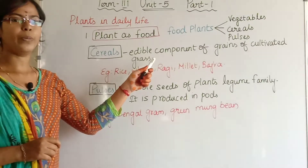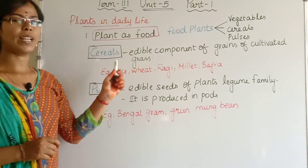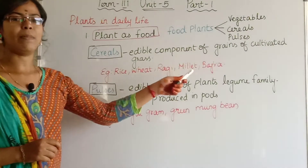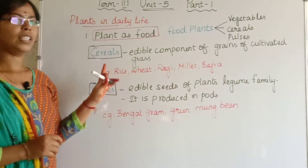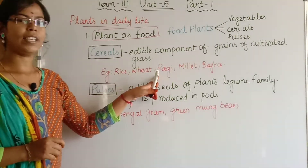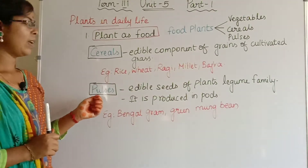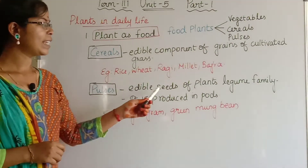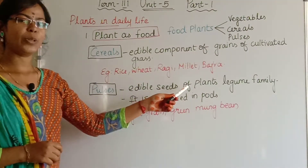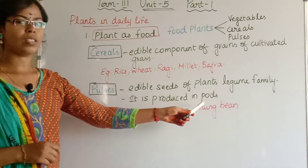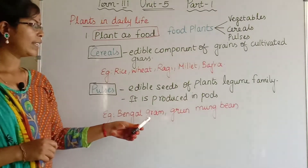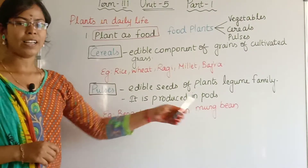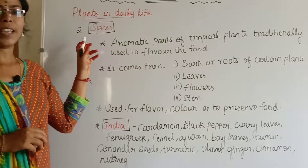Cereals (dhaniyangal) are the edible components of grains of cultivated grass. For example: rice, wheat, ragi, millet and bajra. Pulses (paruppu vagaigal) are the edible seeds of plants of the legume family, produced in pods. For example, bengal gram and green moong bean.